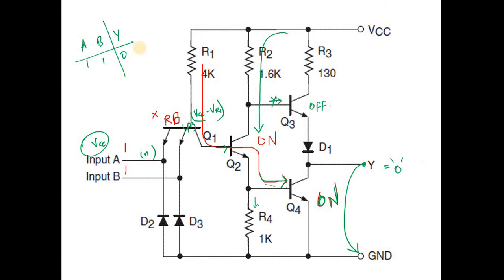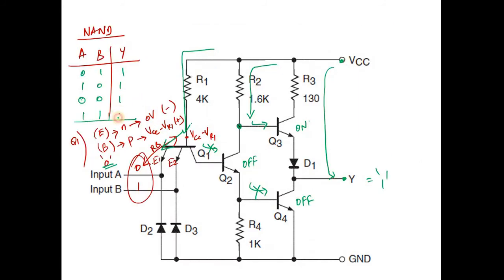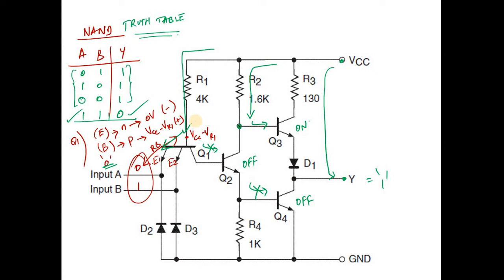This was the final case we were waiting for. This is the truth table we have constructed using the working of the NAND gate. For a NAND gate, if there is a single 0 at the input, the output will definitely be 1. Zero is the controlling input of the NAND gate. If all the inputs are 1, the output will be 0. This confirms the original truth table of the NAND gate.